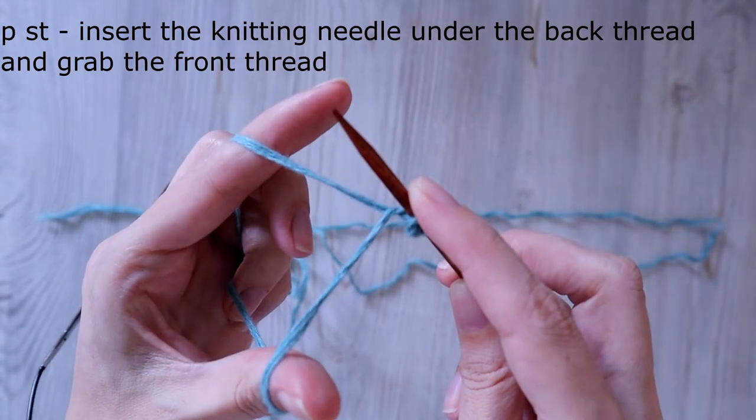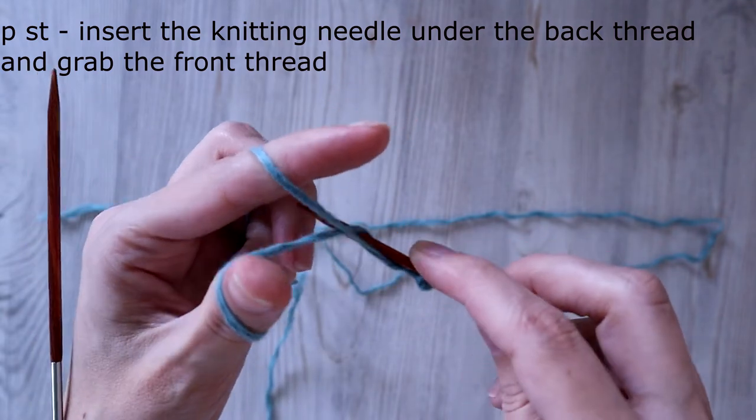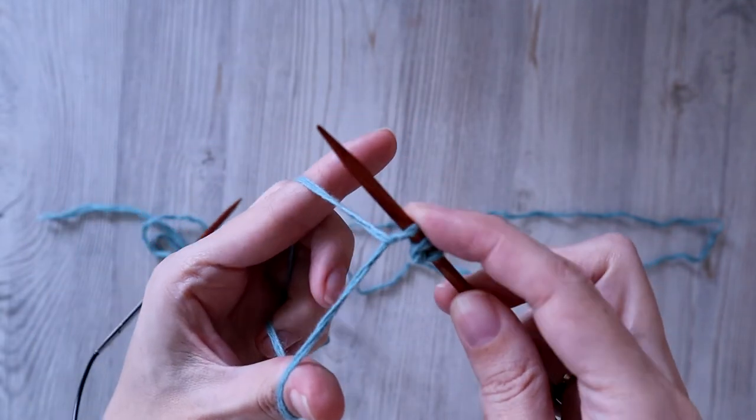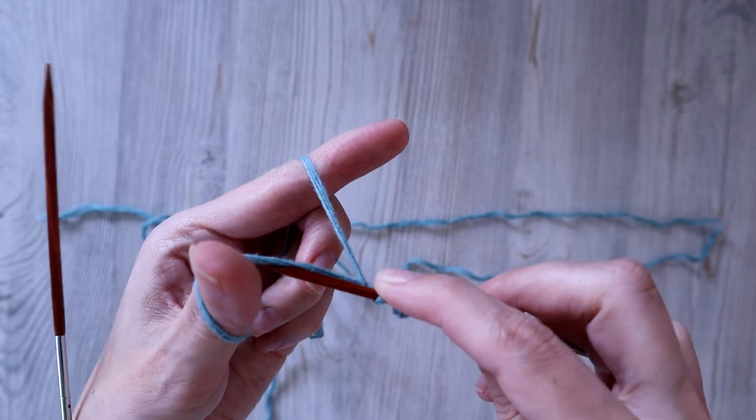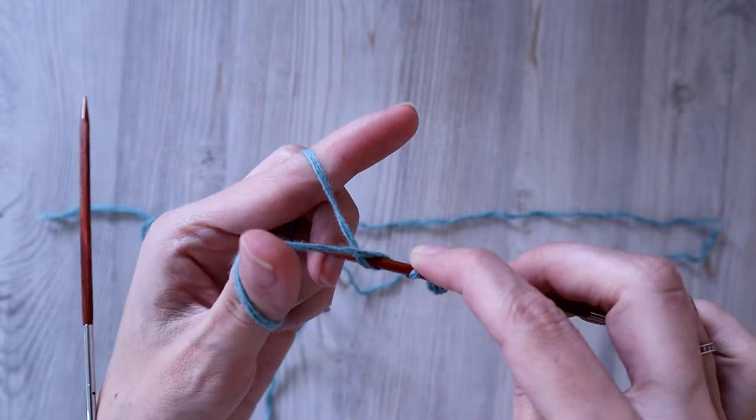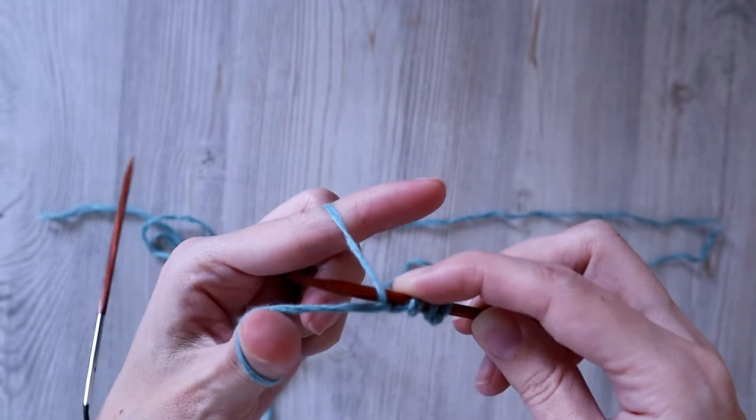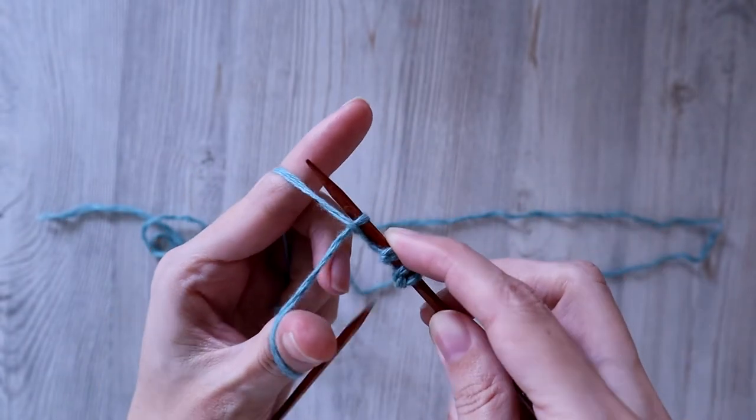Next, I'm going to insert the needle under the back thread and grab the front thread. It's a purl stitch. Insert under the front, grab the back. Insert under the back, grab the front.